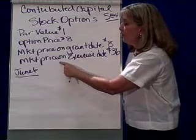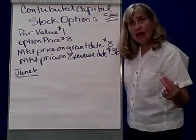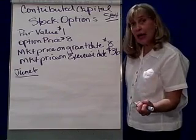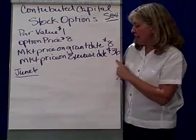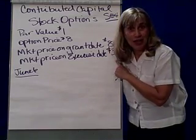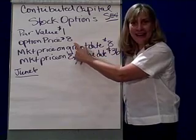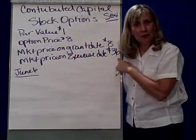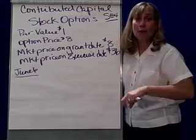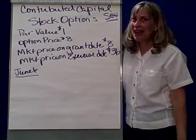The third thing is when we get around to exercising our option — in other words, buying the stock for $8 a share. Notice that on the exercise date, the stock market price was $36. So basically I'm buying stock for $8 while everybody else in the world is buying that stock for $36. Do I immediately have a capital gain? You gotcha.